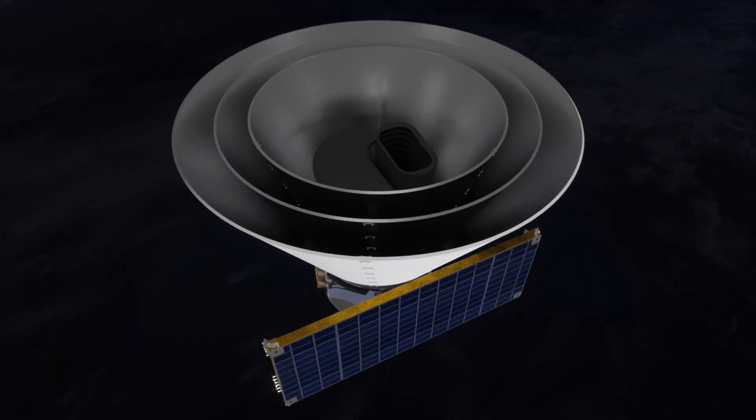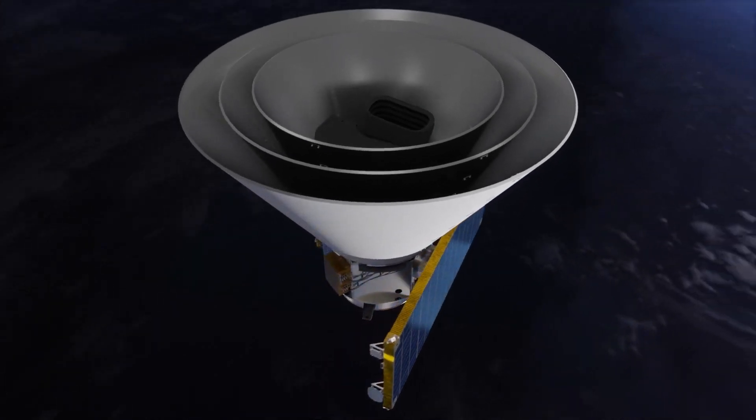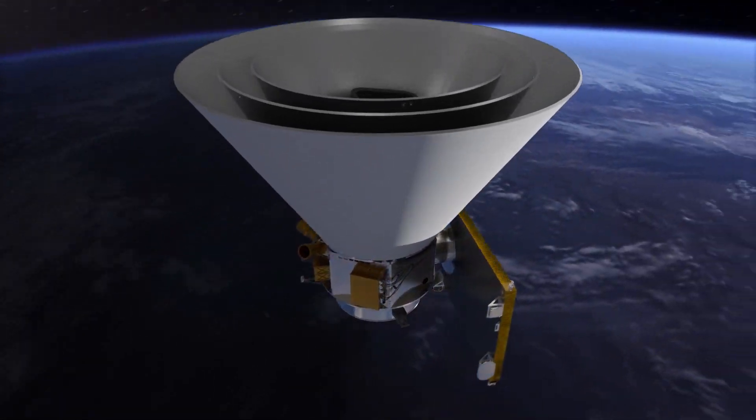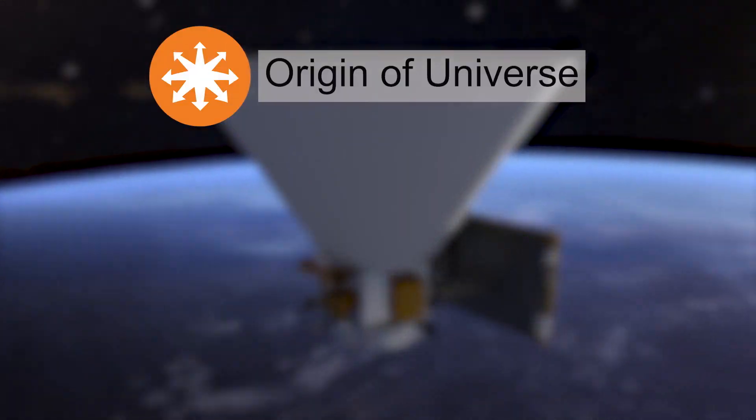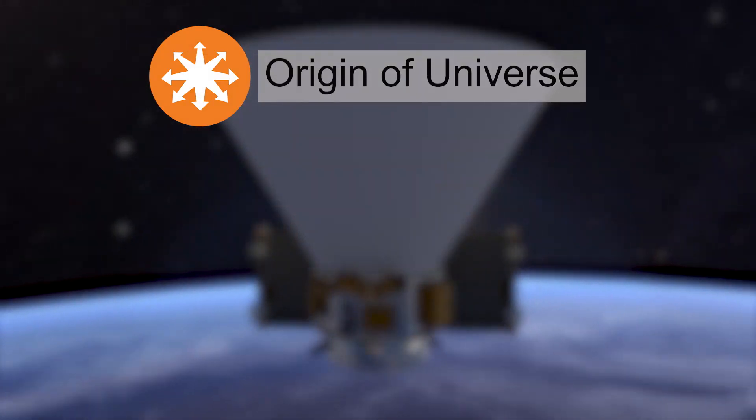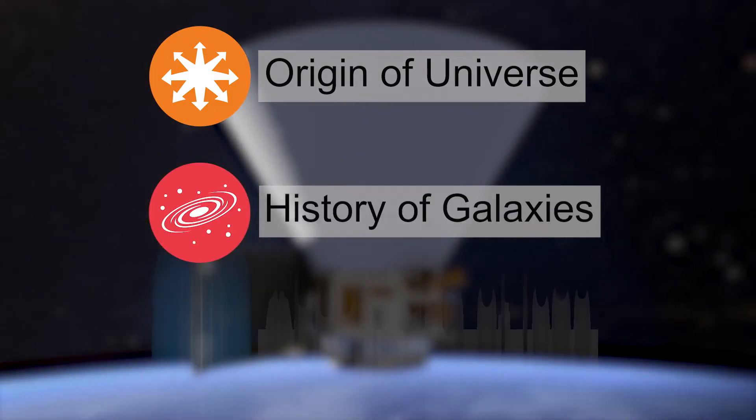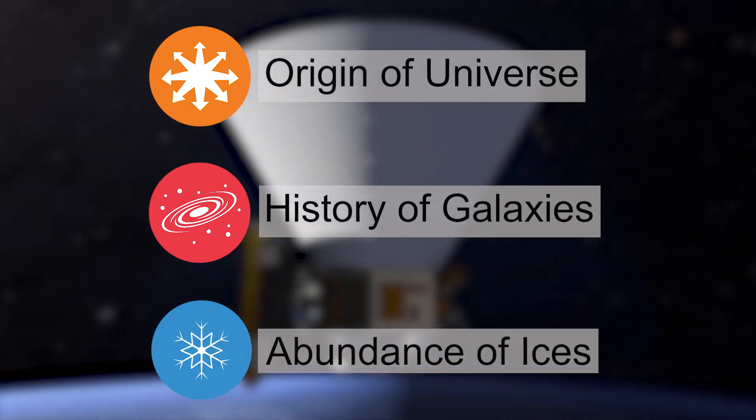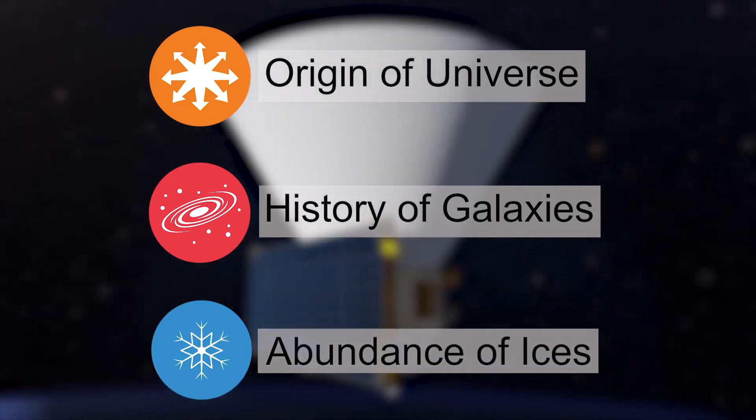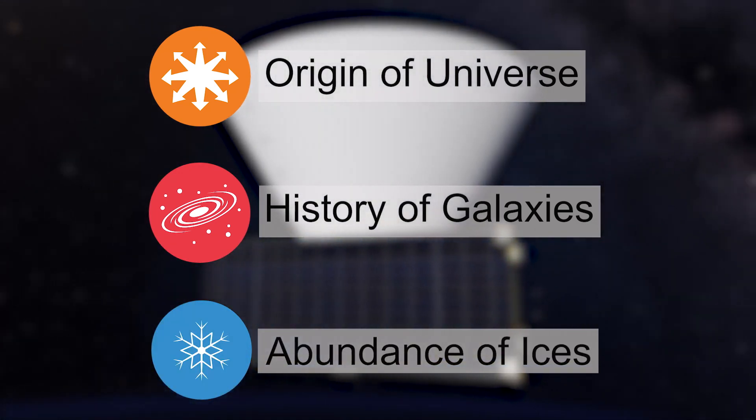We are going to survey the entire celestial sphere and collect a data set that will help us answer three fundamental science questions. It's going to tell us about the origin of the universe, the birth and formation history of galaxies, and the abundance of essential molecules such as water in the early stages of star and planet formation.